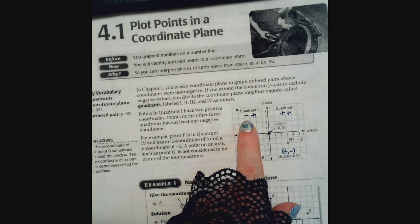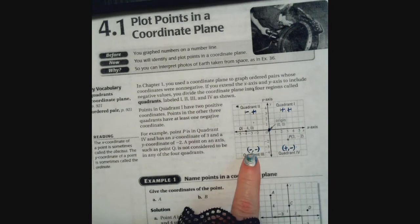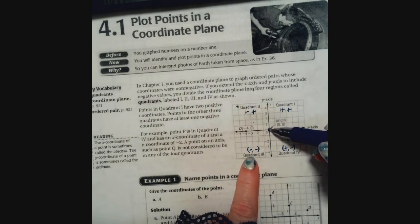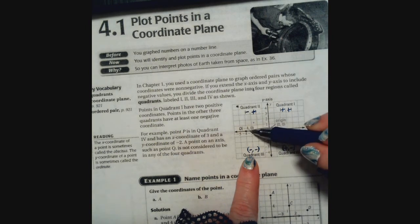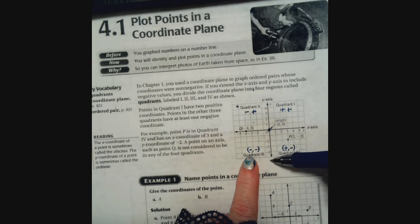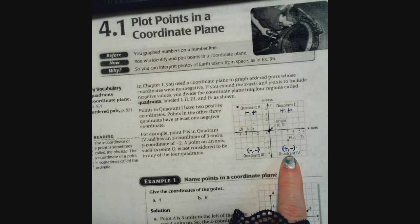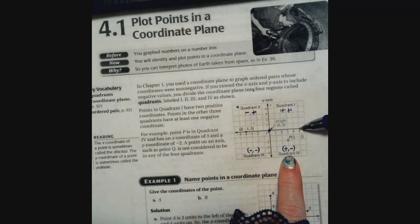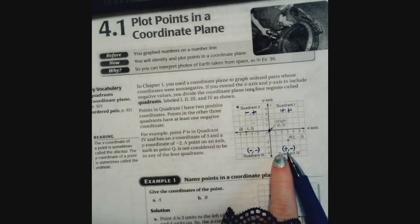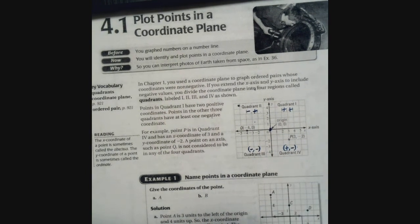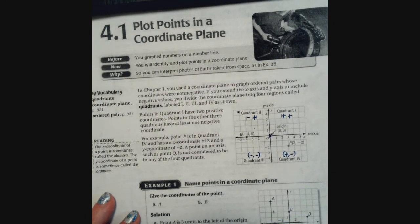In the third quadrant, starting at the origin, x values are negative and as you move down, y values are also negative — so any coordinate in the third quadrant has a negative x and a negative y. In the fourth quadrant, x values are positive but y values are negative as you move down. That's your refresher on the coordinate plane.